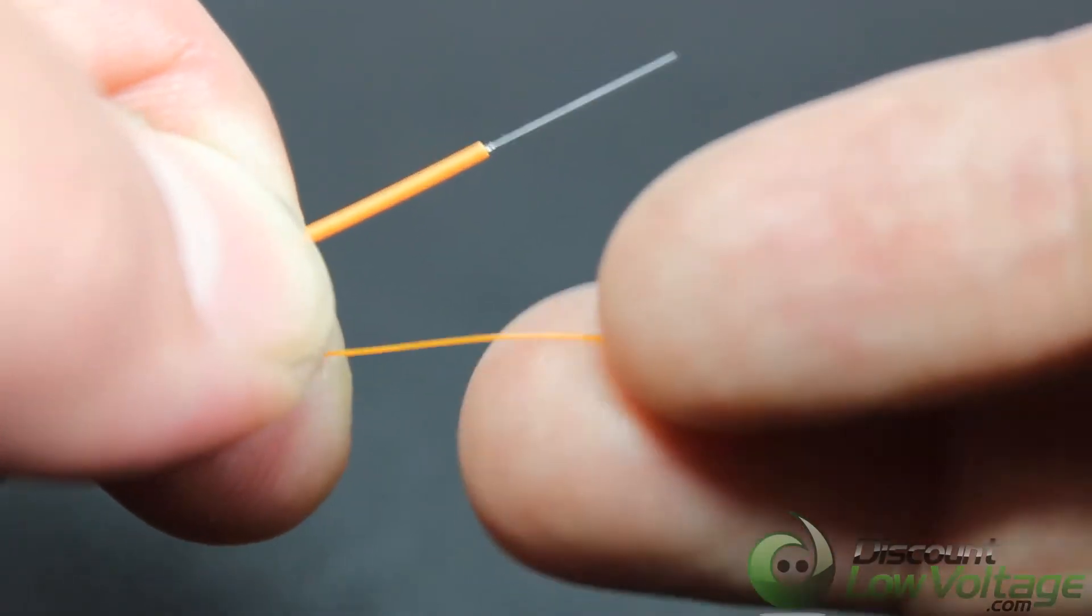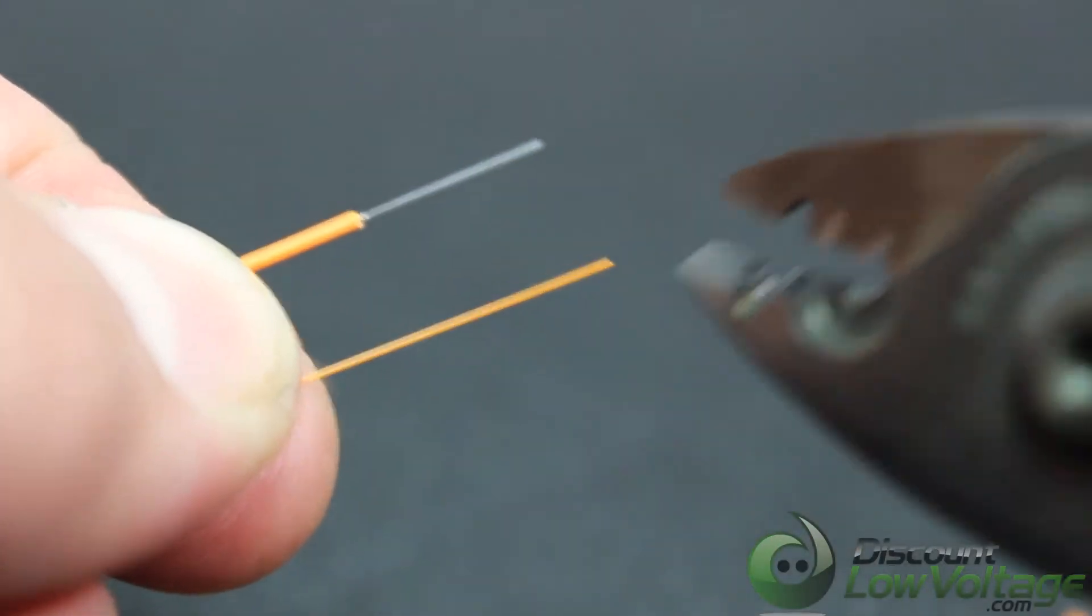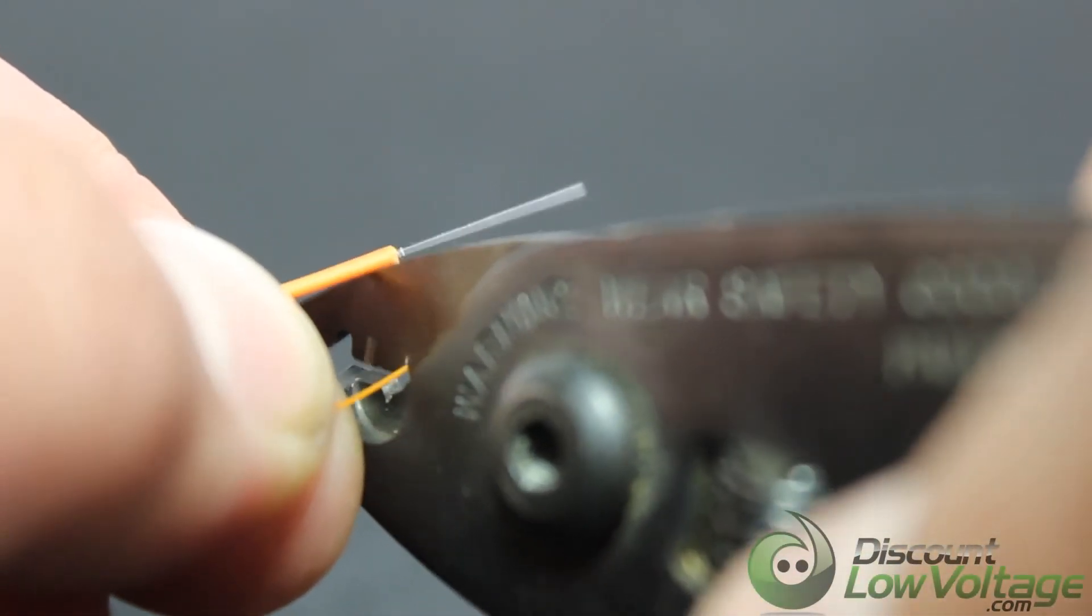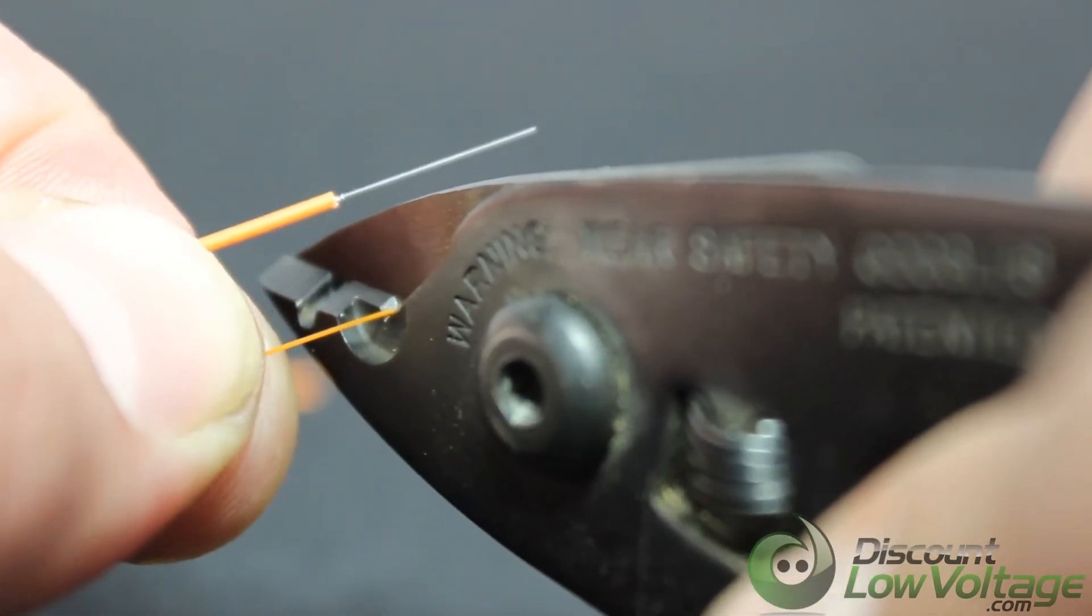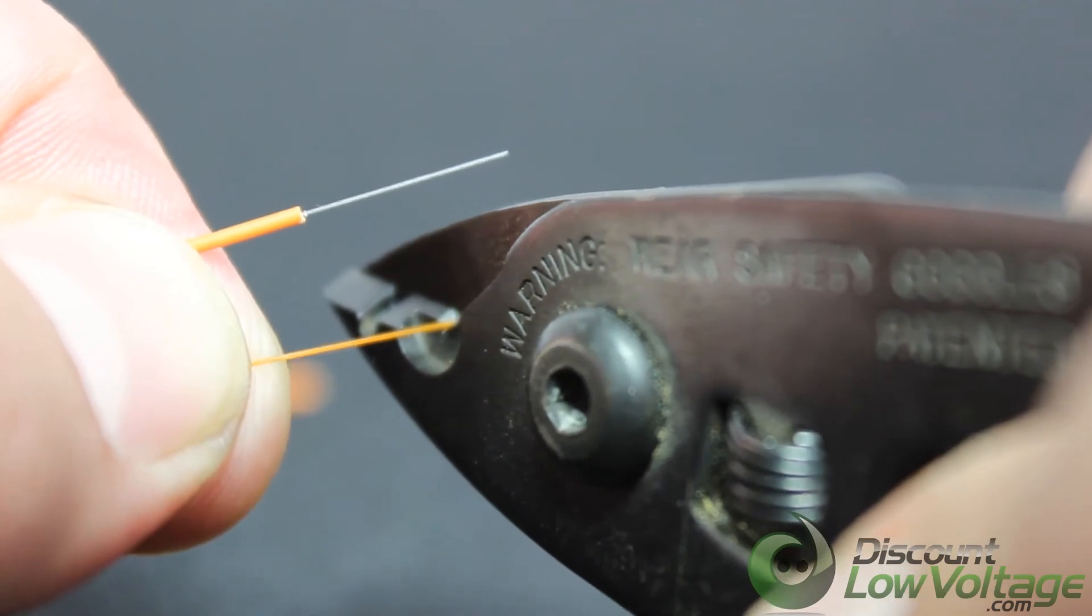Now the core is too small to see obviously, but you have 62.5. But if you do, for example, a 50 micron fiber, that'll be 50. And your single modes are 9/125.